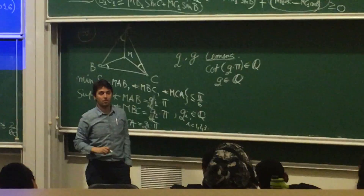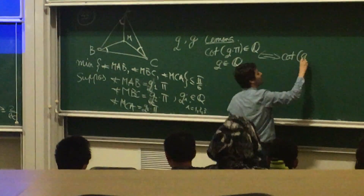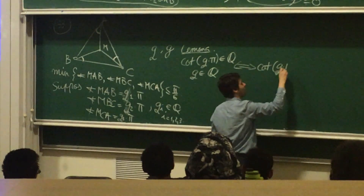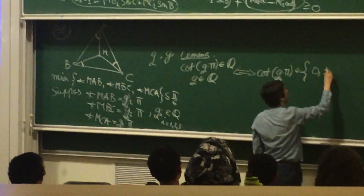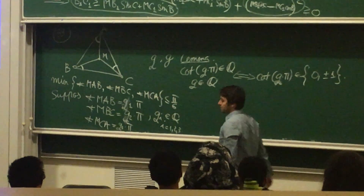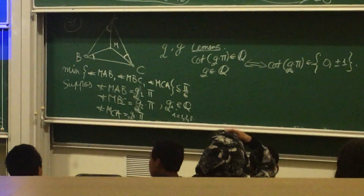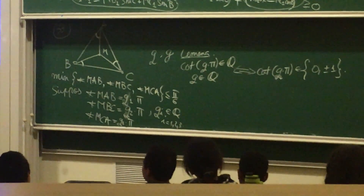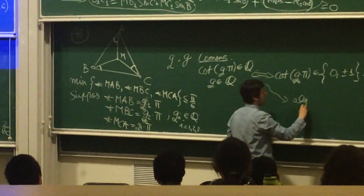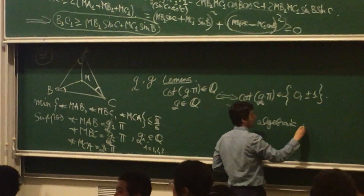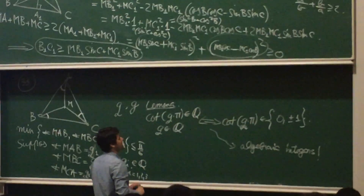When is this rational? If and only if the cotangent of Q·π is 0 or ±1. I'm not going to go into the proof of this, but when I have my lecture on the topic, I'm going to prove this. Let's go back to our problem — take this as a lemma.